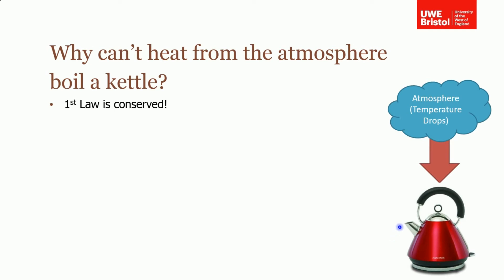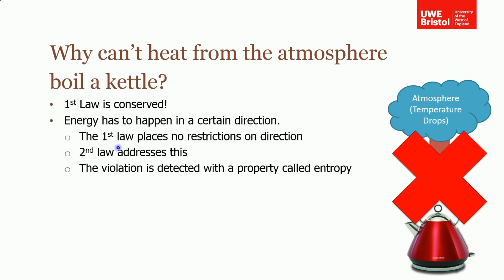Of course, we know that this can't happen. Energy has to flow in a certain direction, and the first law places no restrictions on this direction. But the second law addresses this, and that's what we're going to be talking about today. The violation is detected by a property called entropy, and we'll come to that towards the end of the lecture.